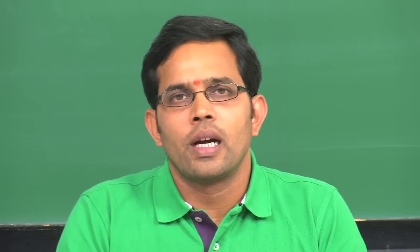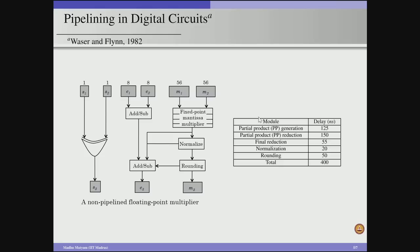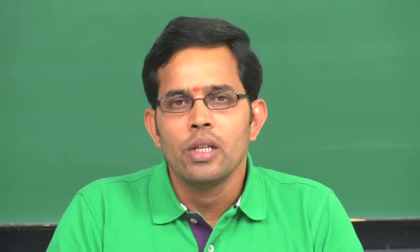The authors observed the following delays for each component: 125 nanoseconds for partial product generation, 150 nanoseconds for partial product reduction, 55 nanoseconds for final reduction, 20 nanoseconds for normalization, and 50 nanoseconds for rounding. The overall latency is 400 nanoseconds for multiplying two floating point numbers. Without a pipeline design, we perform one multiplication every 400 nanoseconds.